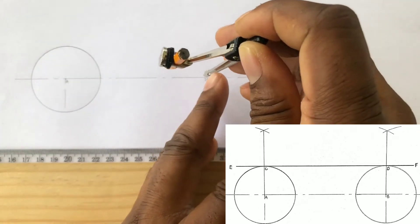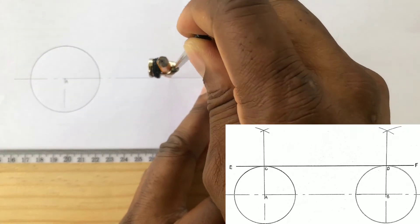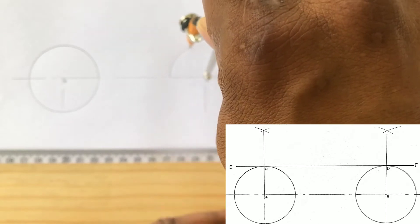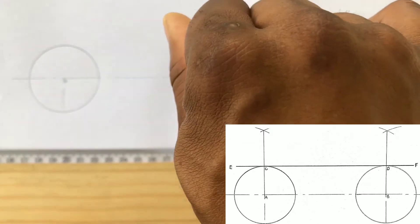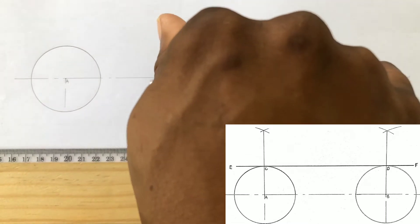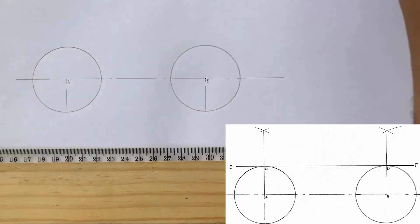From point B, we will also scribe a circle of the same 2.5 centimeter radius. 2.5 centimeters is equivalent to 25 millimeters.